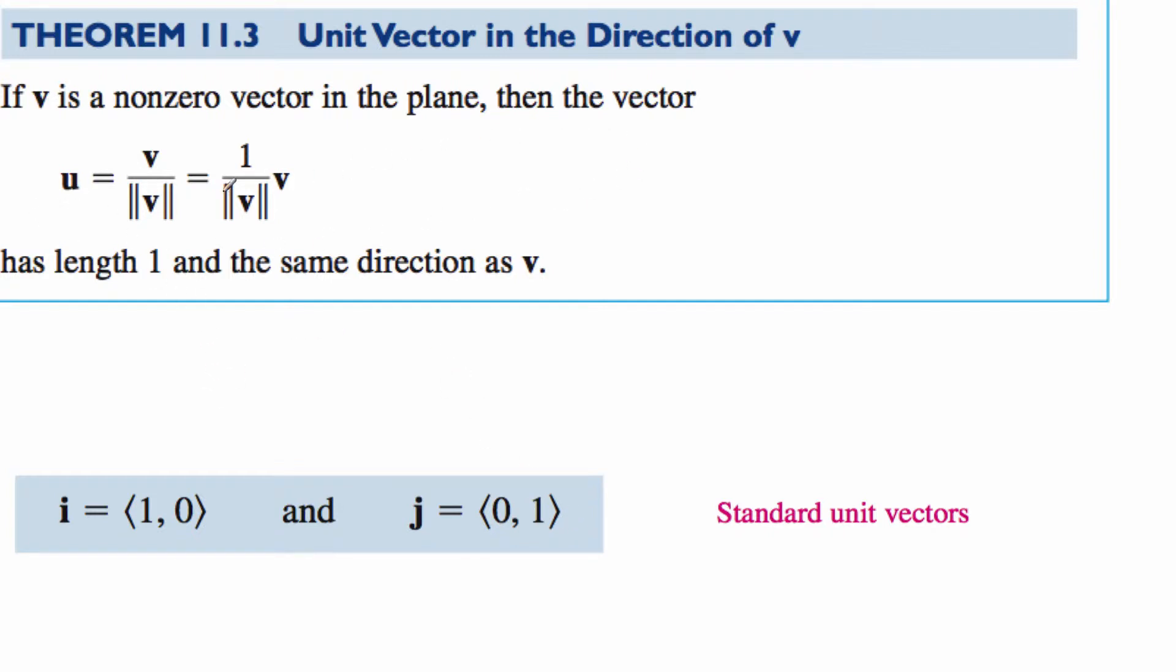To create a unit vector parallel to a vector v, it is the vector v divided by the magnitude of v. This will have the length of 1 and be in the same direction as your initial vector.